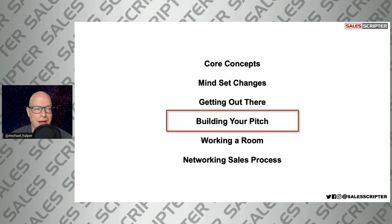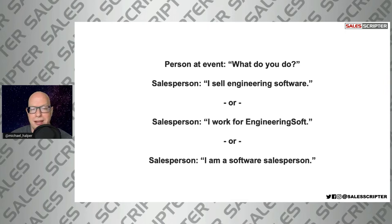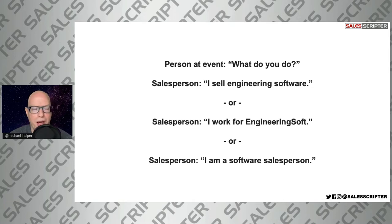Now let's focus on improving what you say and how you communicate when you're at events and when you meet people. One of the most common questions at any networking event is: what do you do? The three most common ways someone might answer are: they answer with what they sell ('I sell engineering software'), who they work for ('I work for engineering software company'), or their role ('I'm a software salesperson'). Nothing really wrong with any of those, but my critique is that it's not very engaging — it doesn't get the momentum of the conversation going and might not even tell the other person much.